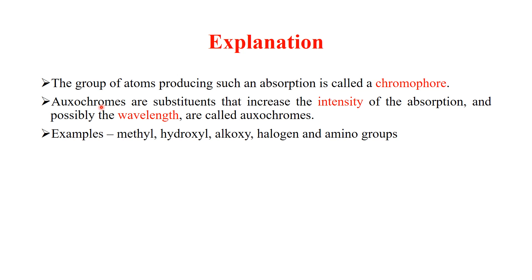Whereas oxochromes are substituents on a chromophore that increase the intensity as well as the wavelength of the absorption band. For example, ethylene can be considered as a chromophore, and if you substitute hydrogen with a hydroxyl group then it becomes vinyl alcohol. Here the hydroxyl group is an example of an oxochrome.